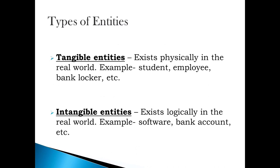There are two types of entities. The first type is Tangible Entities. Tangible Entities are those which exist physically in the real world, like Student, Employee, Bank Locker, etc.